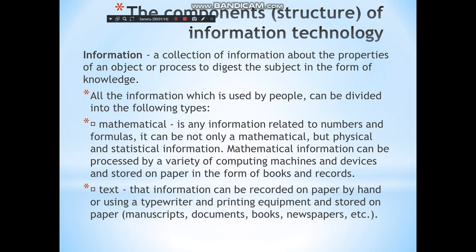The components of information technology. Information is a collection of data about the properties of an object, process, or subject in the form of knowledge. All information used by people can be divided into the following types: mathematical and text. Mathematical information is any information related to numbers — not only mathematical but also physical and statistical. It can be processed by various computing machines and devices and stored on paper in the form of books and records.